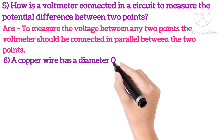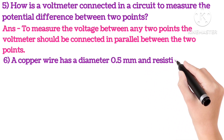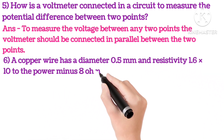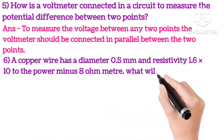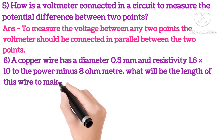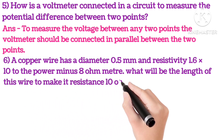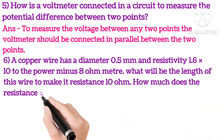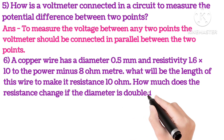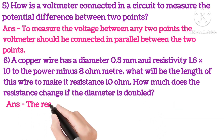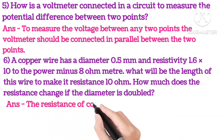Sixth: a copper wire with a diameter 0.5 mm and resistivity 1.6 x 10 to the power minus 8 ohm meter. What is the length of the wire to make its resistance 10 ohm? And how much does the resistance change if the diameter is doubled?